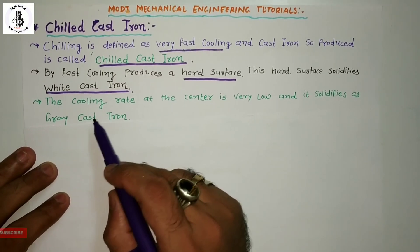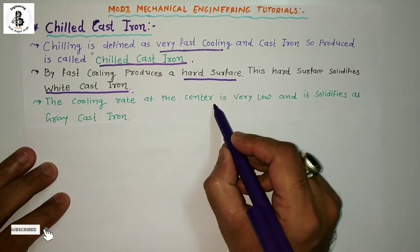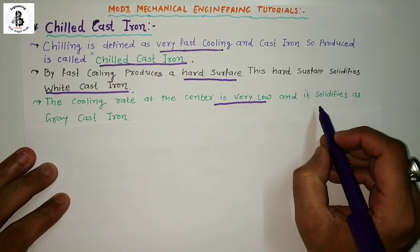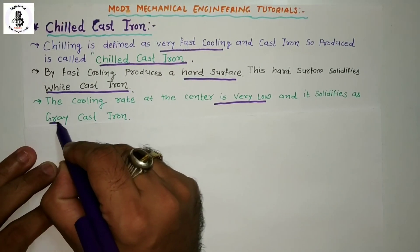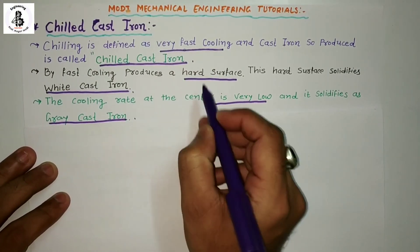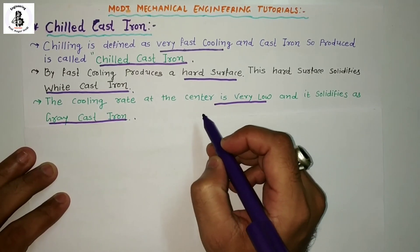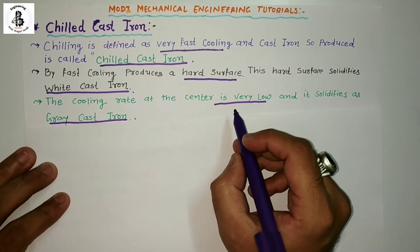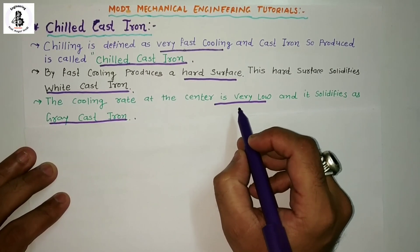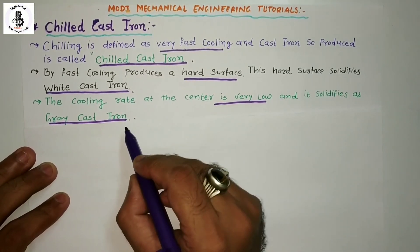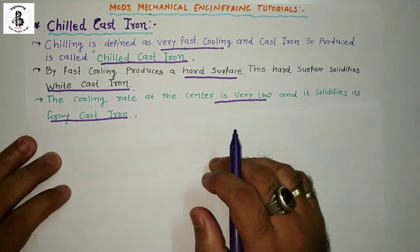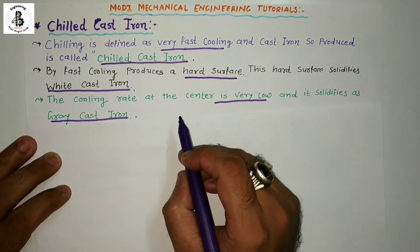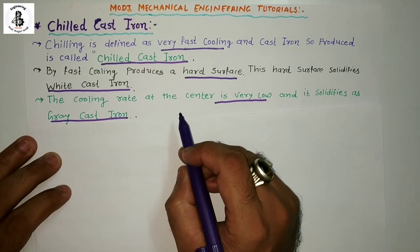What happens is the cooling rate at the center is very low, and it solidifies as grey cast iron. So at the outer periphery of the cast iron it becomes harder, but at the inner portions the cooling is very low, so it solidifies as grey cast iron. Hence the fracture shows grey cast iron at the core and white cast iron at the casing.